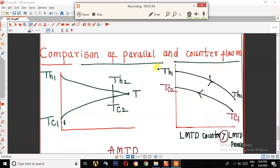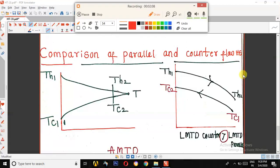Comparison of Parallel and Counter Flow Heat Exchanger. From the above figure it is clear that more temperature fluctuations are observed in Counter Flow Heat Exchanger. Hence, LMTD of Counter Flow Heat Exchanger is always greater than LMTD of Parallel Flow Heat Exchanger.